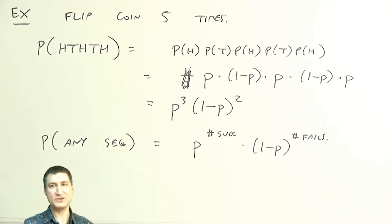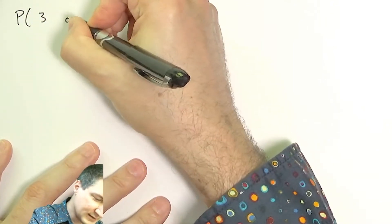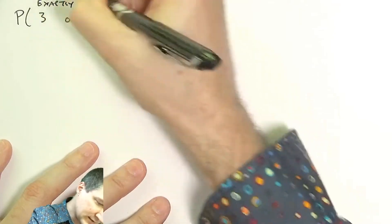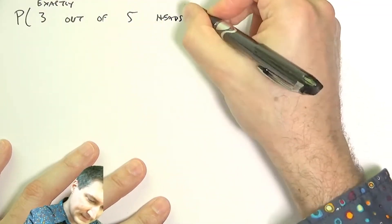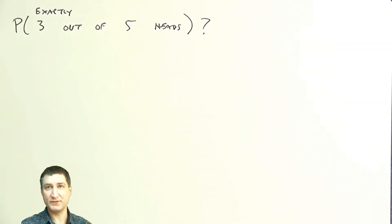That's pretty straightforward, but now say I want to ask: what is the probability that I got exactly three heads out of five? I don't care what the order was. So I could say, what is the probability of exactly three out of five heads?